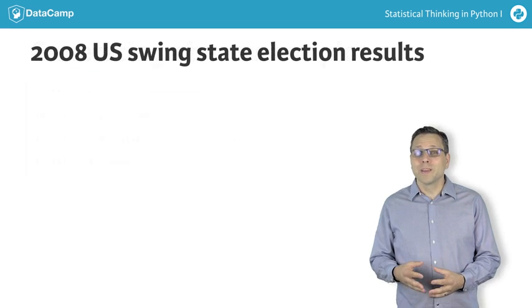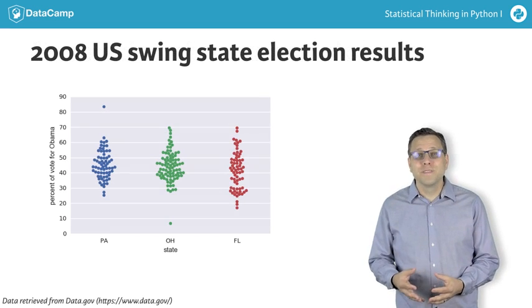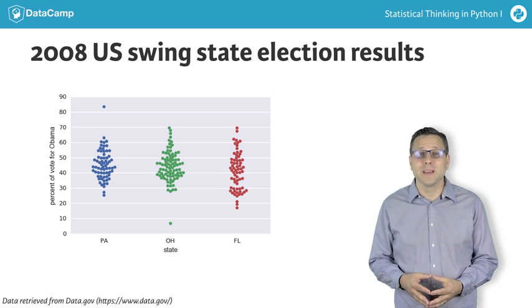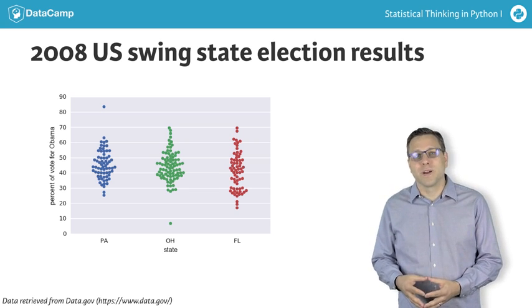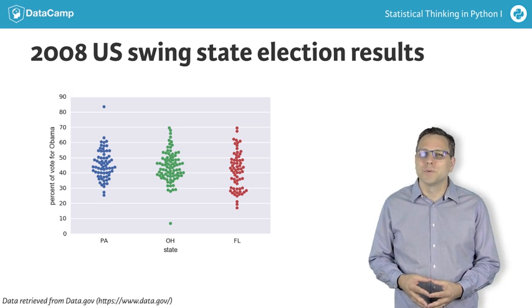From this plot too, we can clearly see that Obama got less than 50% of the vote in the majority of the counties in each of the three swing states. This time, the plot is more detailed than the histogram, but without too much added visual complexity.